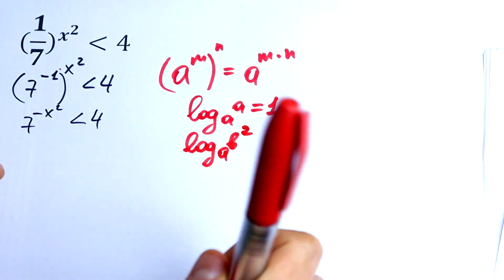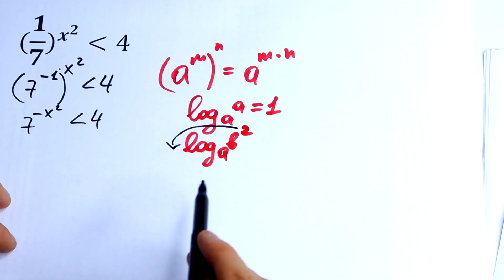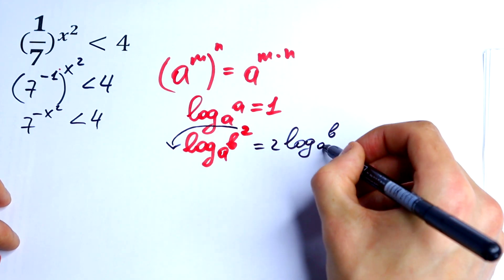For example, we have a squared right here. Our exponent jumps right here. So we will have 2 times log base a of b.